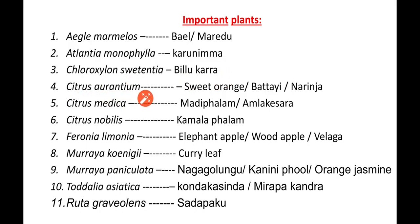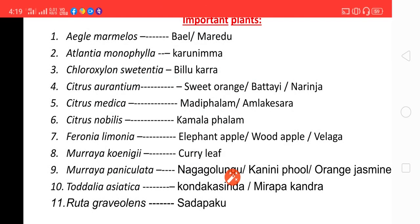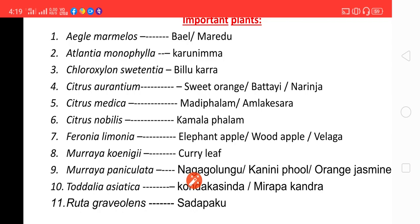Next one is Citrus aurantium, called sweet orange or Batai or Naranja. Next one is Citrus medica, called Madhi Phalam or Amla Kesara. Next one is Citrus nobilis, known as Kamala Phalam. Next one is Ferronia limonia, called elephant apple, wood apple, or Velaga. Next plant is Murraya koenigii — in Telugu it is called Karvepaku, in English it is called curry leaf.